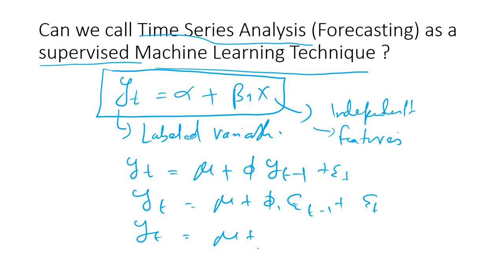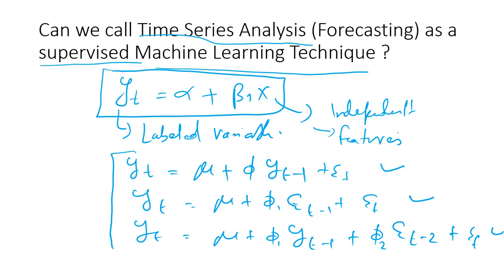ARMA is a combination of AR and MA. So you have the lag and you have the error term. In all these cases, we have a variable which is a level variable, or a dependent variable or target variable, and then we have a bunch of independent variables. The difference between a linear regression model and the time series model is that the independent variable or the right-hand side variables are nothing but the lag of the dependent variable.